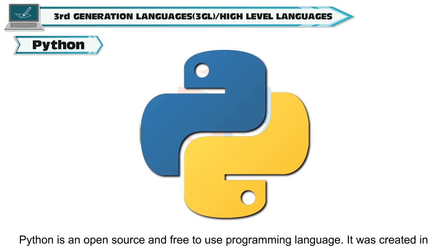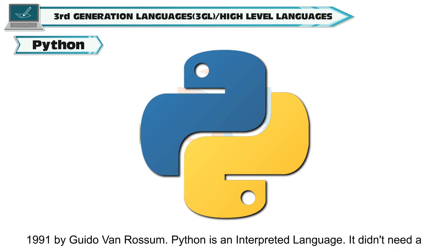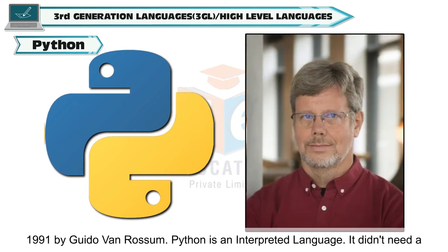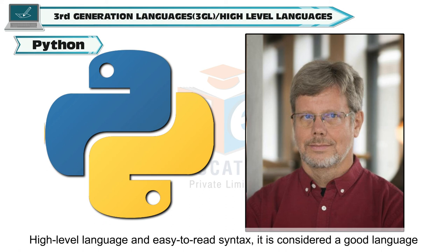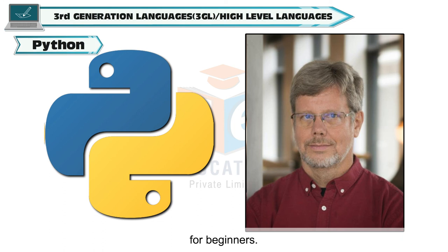Python is an open-source and free-to-use programming language. It was created in 1991 by Guido Van Rossum. Python is an interpreted language and didn't need a compiler, as interpreters could run the program on all target computers. Because of its high-level language and easy-to-read syntax, it is considered a good language for beginners.